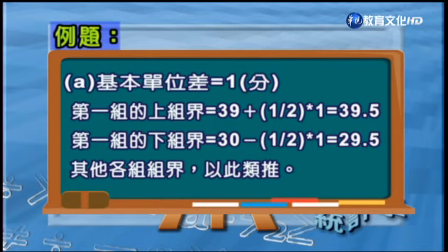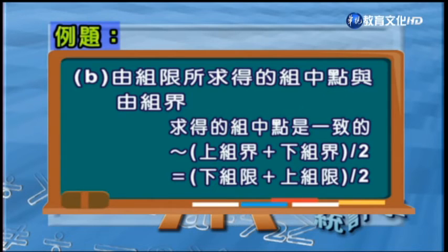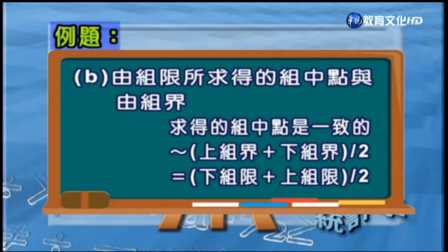第一組的下組界是29.5分，其他各組的組界都可以依此類推，因此可以得到各組的分布情形。再來下一個步驟，要由組界跟組限求得組中點。所謂組中點就是把上組限加下組限除以2，或者上組界加下組界除以2，都可以得到組中點。組中點代表這一組資料的中心位置在什麼地方，一般可以用組中點來代表這一組資料的所有值。